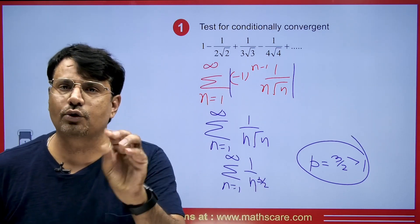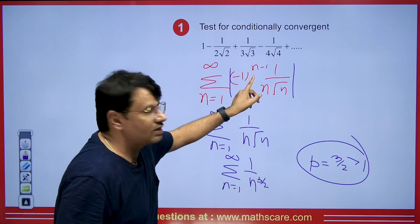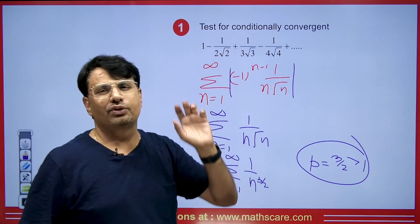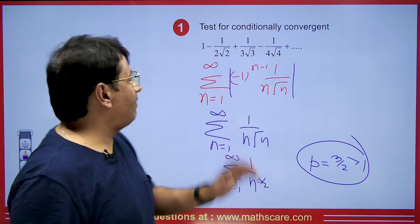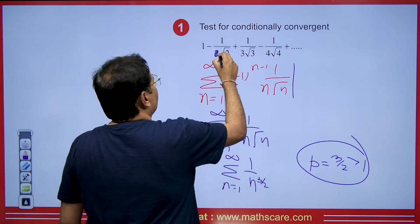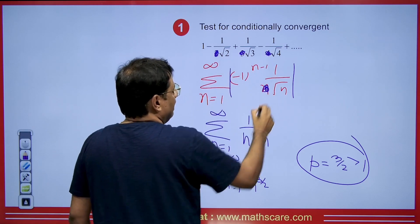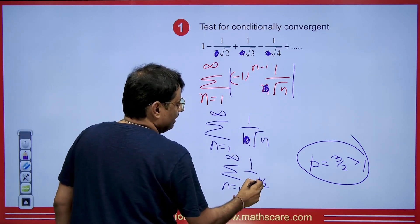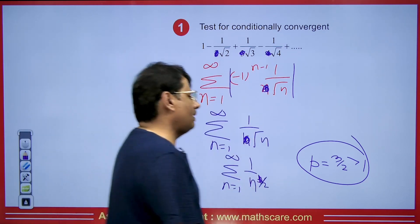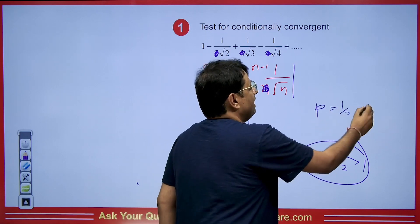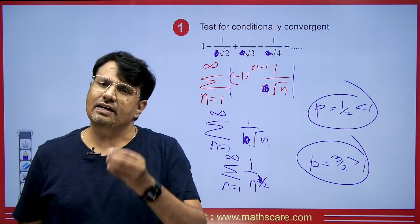This means the series is absolutely convergent — it will not be conditionally convergent. If we take the modulus and it comes divergent, then it becomes conditionally convergent. However, if in the question only the root were present without the additional factors, then this would become power 1/2, and the value of p at 1/2 would be less than 1, so in that case the series would have become conditionally convergent. You need to understand this distinction.